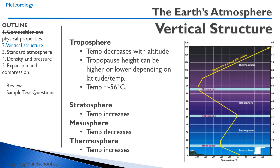If we look at the atmosphere of the earth, we can divide it into different vertical structures. The first structure we'll talk about is the troposphere. The troposphere is where the majority of the weather that we're dealing with occurs. It extends from about the surface to about 35,000 to 40,000 feet, depending on the latitude and the temperature.